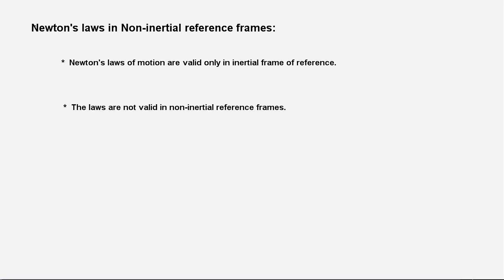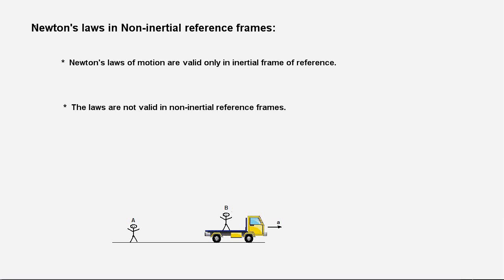So what is the physical meaning of these two statements? Let's understand using a simple example. Here in this diagram, we have two observers: observer A standing on the ground and observer B standing on a truck which is moving to the right with an acceleration A. A reference frame attached to observer A or the ground is an inertial reference frame because Earth is considered to be a good inertial reference frame for all practical purposes. We ignore its spinning motion about its own axis and its orbital motion about the sun, and Earth is considered to be a good inertial reference frame.